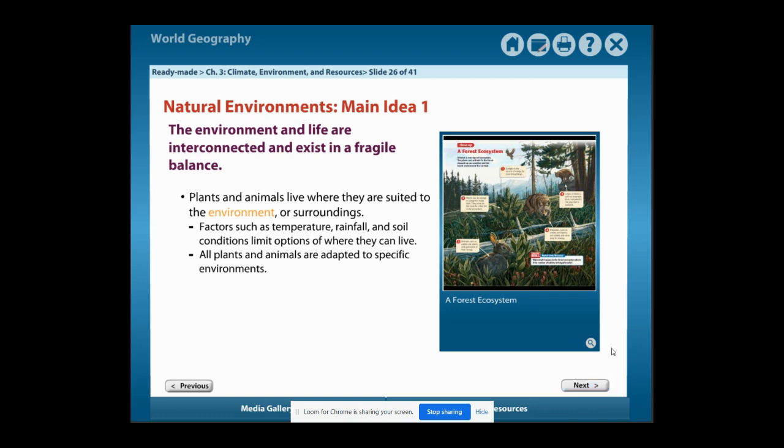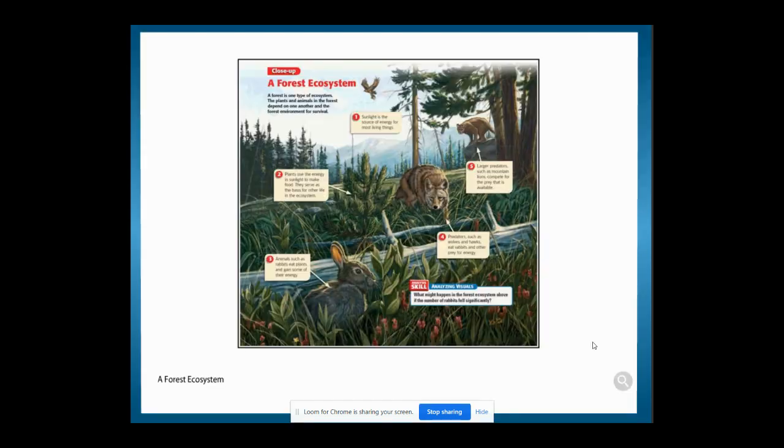Let's take a look at this forest ecosystem. A forest is one type of ecosystem. The plants and animals in the forest depend on one another and the forest environment to survive.